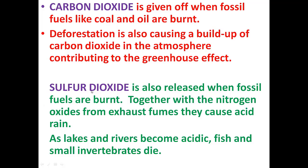Sulfur dioxide is also released when fossil fuels are burnt. Sulfur dioxide, together with nitrogen oxides from exhaust fumes, forms acid rain. When acid rain falls in lakes and rivers, it makes the water acidic and kills fish and small invertebrates.